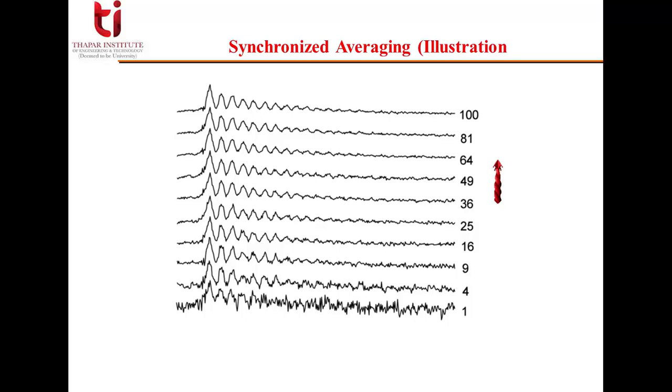But the most important requirement in synchronized averaging is that the realizations of signals that are added must be aligned such that the repetitive part of the signal appears exactly at the same instant in each realization of the signal. If it is not done, then the waveform of the event in the signal will be blurred or smudged along the time axis.